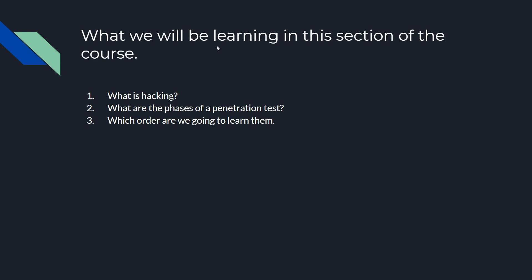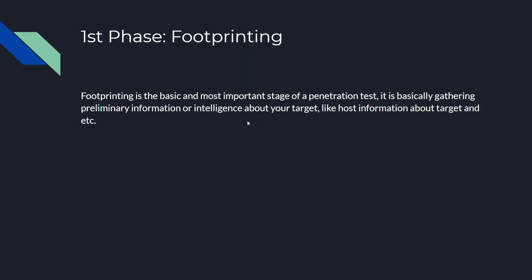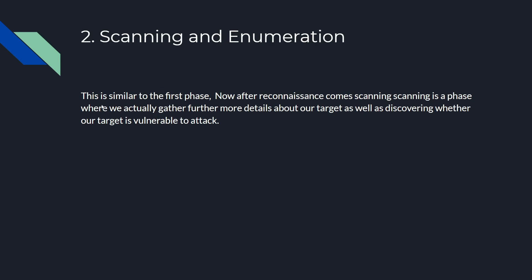In this section of the course we will be learning: what is hacking, what are the phases of a penetration test, and which order we are going to learn them. The first phase is footprinting. Footprinting is the most basic and important stage of a penetration test — it is essentially gathering preliminary information or intelligence about your target, like host information, what operating system it is running, and so on.